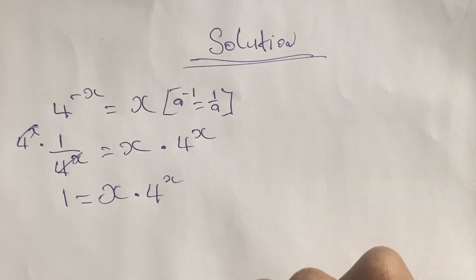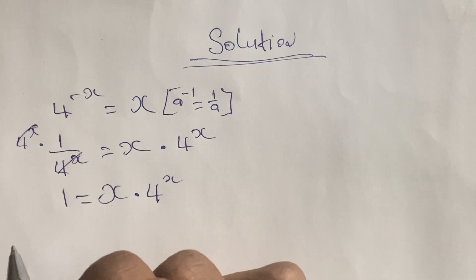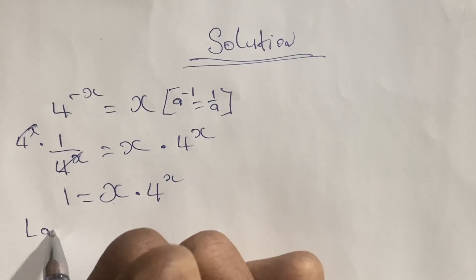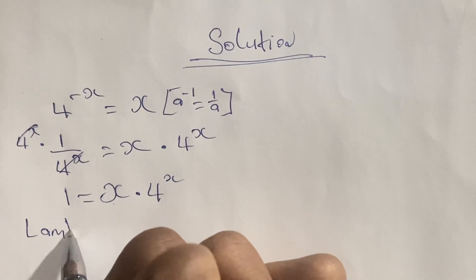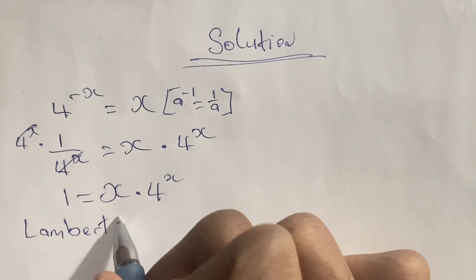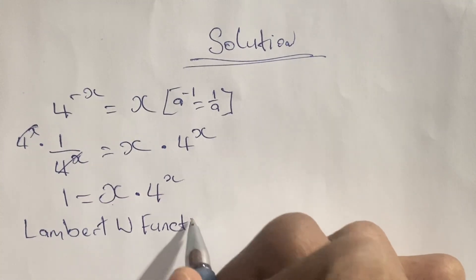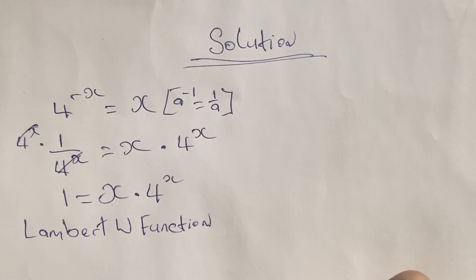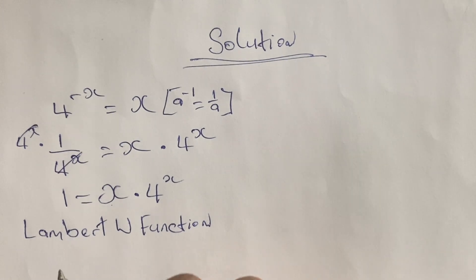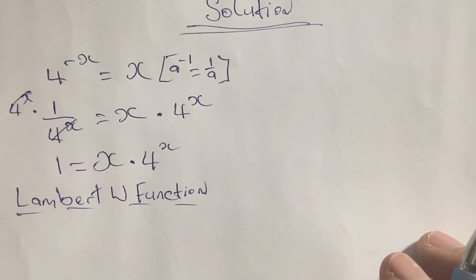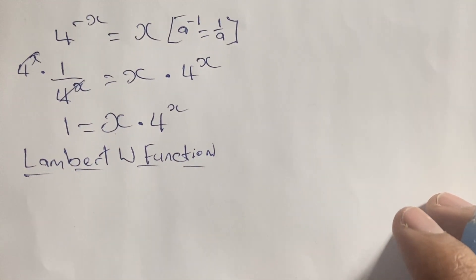Now we have x on one side of this equation, and from here I'll be introducing my method for solving this equation — the Lambert W function. This is a very special type of function used to solve equations where we have the variable in the base and also in the power. In this case, x is in the base and x is in the power, as 4 is raised to the power of x.